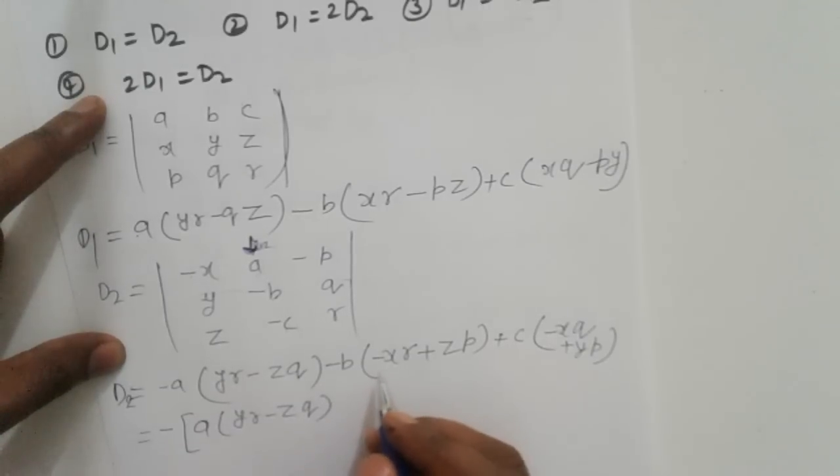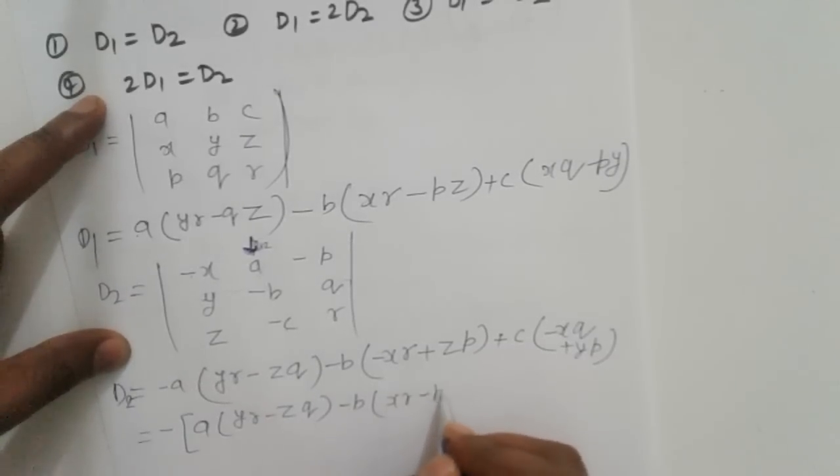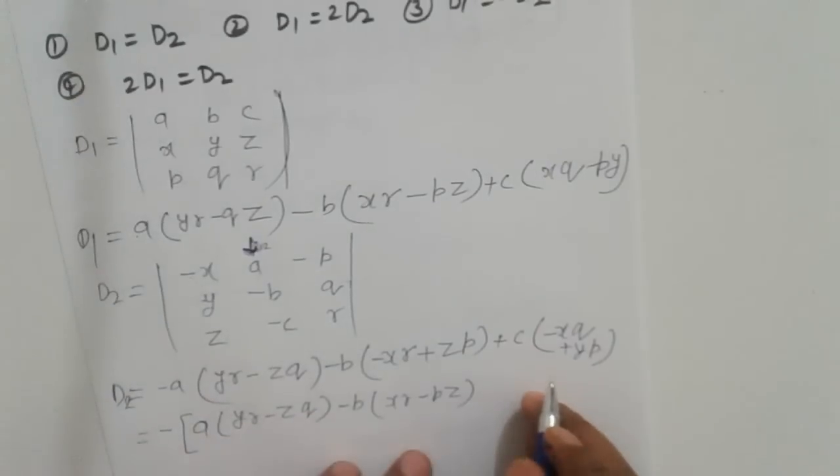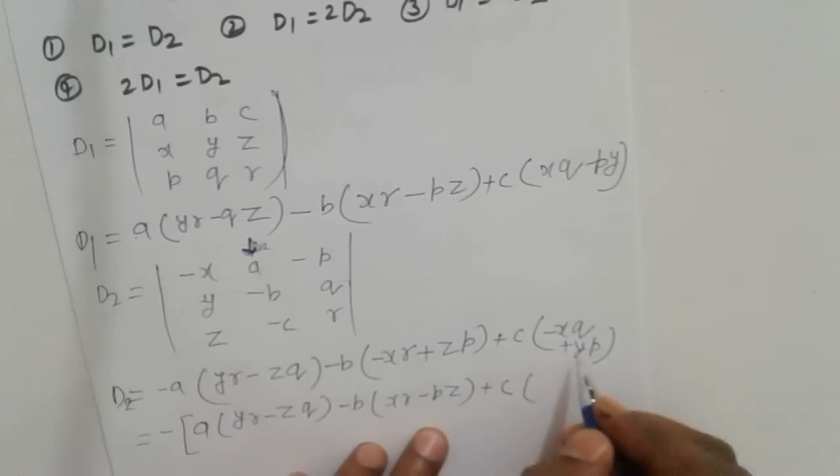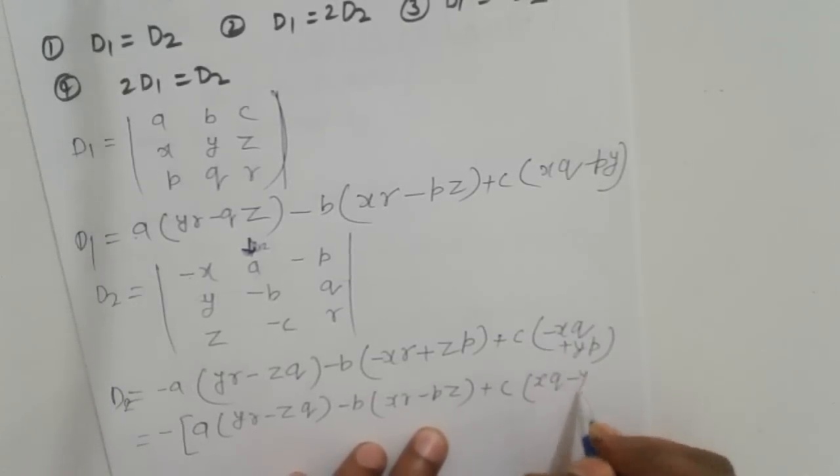This becomes plus B times (XR - ZP), and minus C times (XQ - YP). Simplifying this expression.